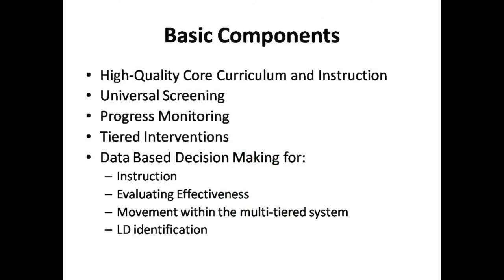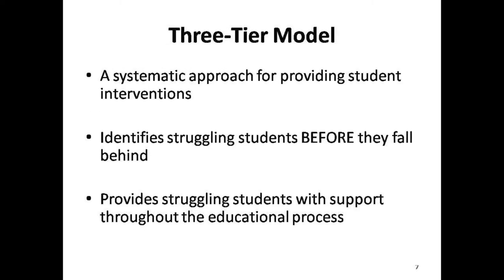The basic components of an RTI approach are the provision of scientific research-based instruction and interventions in the general education classroom, monitoring and measurement of student progress in response to the interventions, and use of these measures of student progress to make educational decisions. The RTI process is started when a student demonstrates academic and/or behavioral challenges based on universal screening data, student products, and classroom observation, and who despite receiving adequate instruction, fails to make sufficient progress in general education without the use of specific supports.